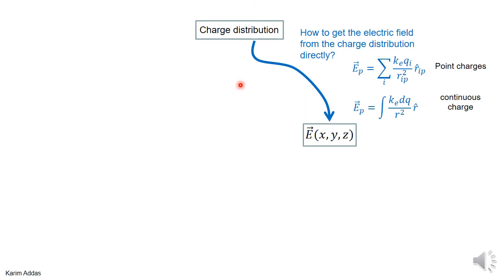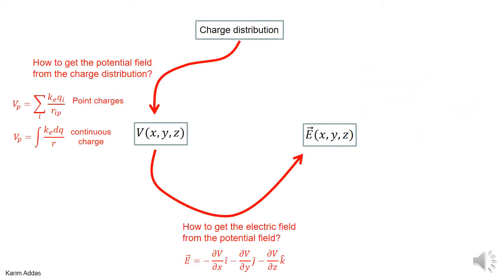In the chapter on electric field we were able to get the electric field at a point in space due to many point charges, and due to continuous charge distributions using those equations. What we're proposing in this part of the chapter is an alternative path: first get the potential. Getting the potential is easy because you add numbers — the potential due to point charges or continuous charge distributions is a scalar, so it has no X, Y, Z components. Once you know the potential and want the electric field, you just do a simple differentiation.